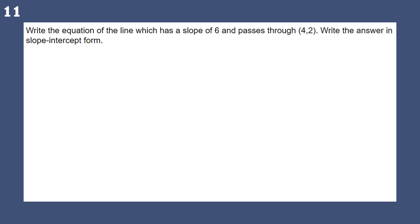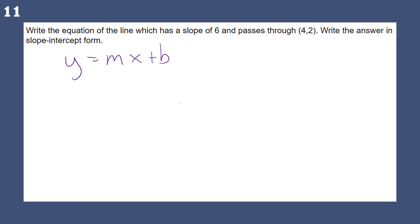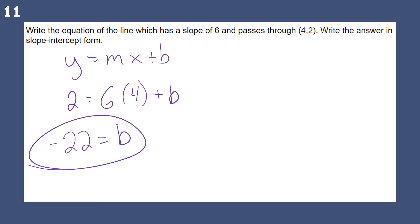Write the equation of the line with a slope of 6 that passes through (4, 2). I'll use y equals mx plus b. I don't know b — the point (4, 2) gives me x and y values. So I plug in: y is 2, slope is 6, x is 4, and solve for b. Multiplying 6 and 4 gives 24; subtracting from both sides gives negative 22 equals b. So the equation is y equals 6x minus 22.